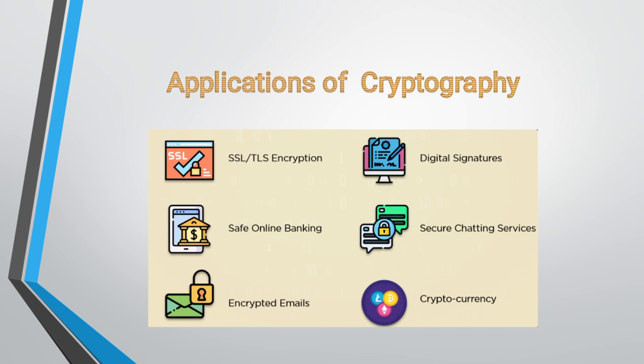Another used area of cryptography is encrypted emails. With a vast amount of private information passing through your inbox, having a secure method of communication is an absolute necessity. Encryption algorithms like Pretty Good Privacy ensure our emails are now encrypted at all times.